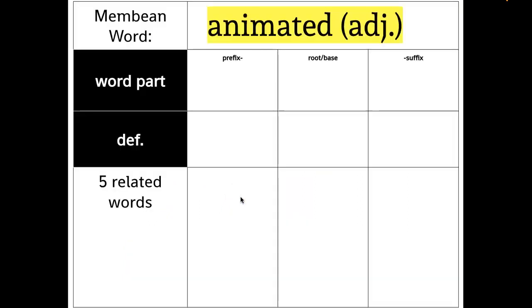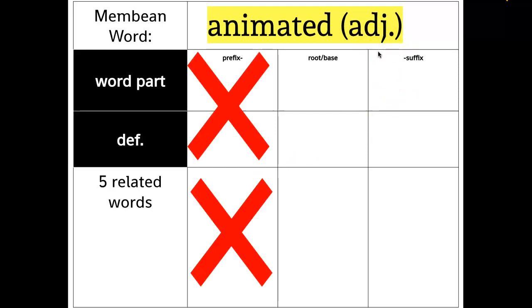So the word we're going to do is animated. So right now in the first box, you're going to write animated. And I want you to write its part of speech. It's an adjective. And when I looked at the breakdown of the word part, it didn't have prefixes, so you can just put an X in this box. I'm going to tell you when you do this, you need to pick a word that has at least two. Either it has to have a prefix and a suffix, or a prefix and a root, or a root base and a suffix. So you have to have at least two columns filled in.